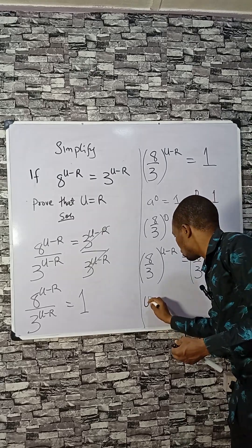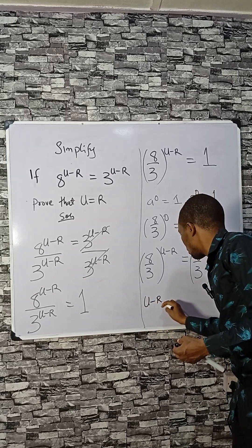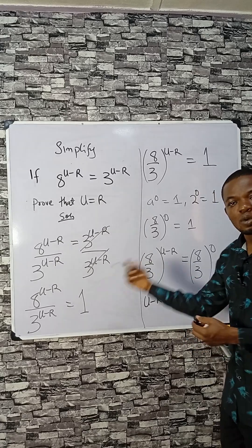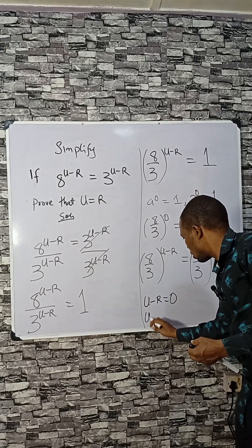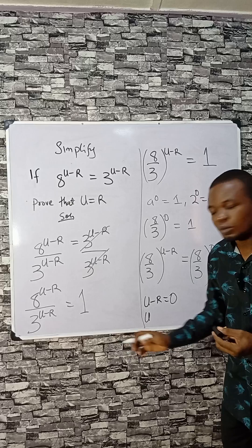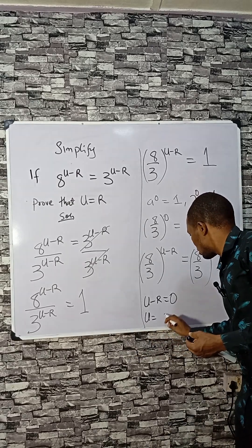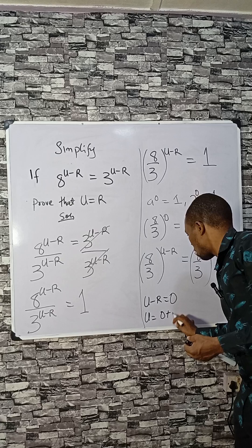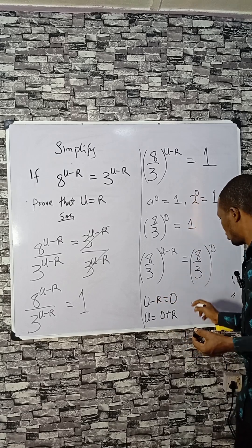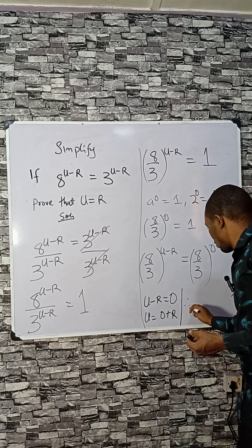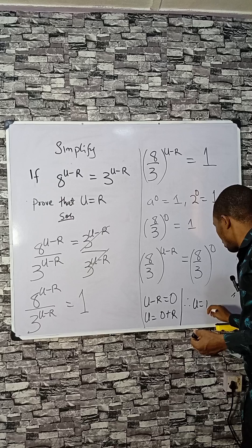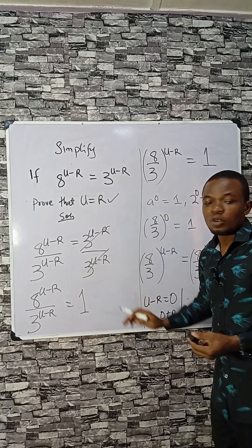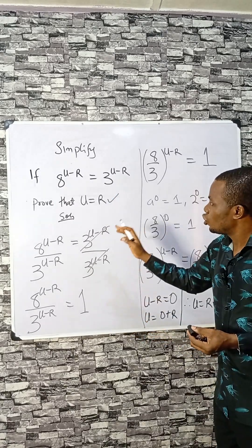Since the bases are the same, the exponents must be equal: u minus r equals 0. Making u the subject, r moves to the other side giving 0 plus r, which is r. Therefore u equals r.